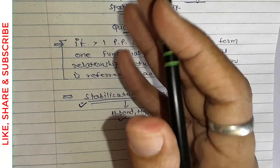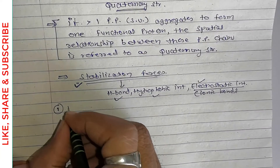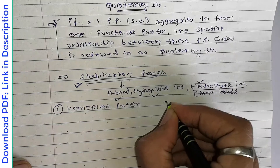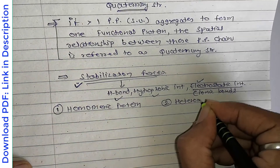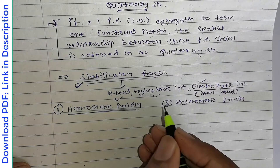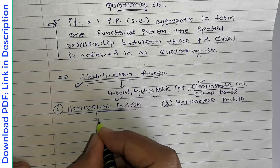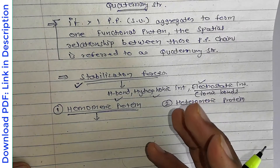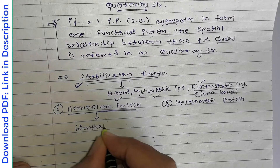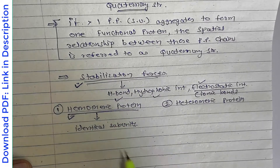In relation to quaternary structure, there are two important terms to understand. The first is homomeric protein and the second is heteromeric protein. In quaternary structure, there are more than one polypeptide chain, and it is possible that all these chains are identical. When we have identical subunits or identical polypeptide chains, we call such a protein a homomeric protein.